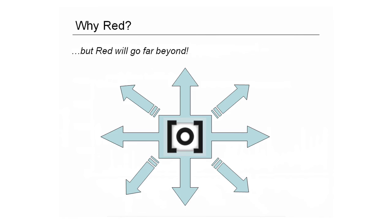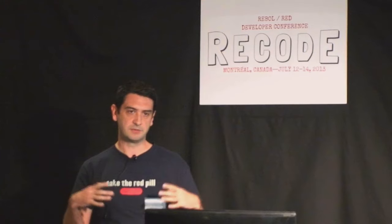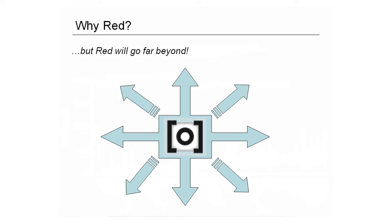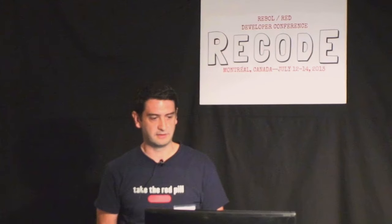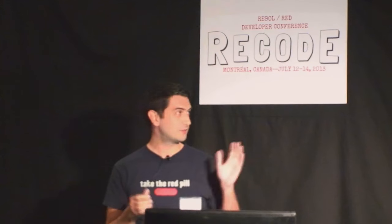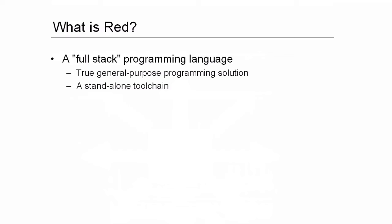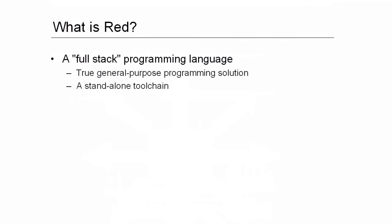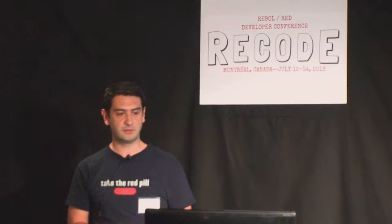RED tries to go beyond what Rebol provides — mainly in terms of implementation, not language semantics or syntax, but more in terms of tool chains, implementations, and spreading. So what is RED really? RED is what I call a full-stack programming language. Maybe you've heard about full-stack developers — this is a full-stack programming language. Its main characteristic is that it's a true general-purpose programming solution. There are many languages that advertise as general-purpose, but they are not as broad as RED can be. RED is also a standalone tool chain — we are not depending on the standard classic tool chain.